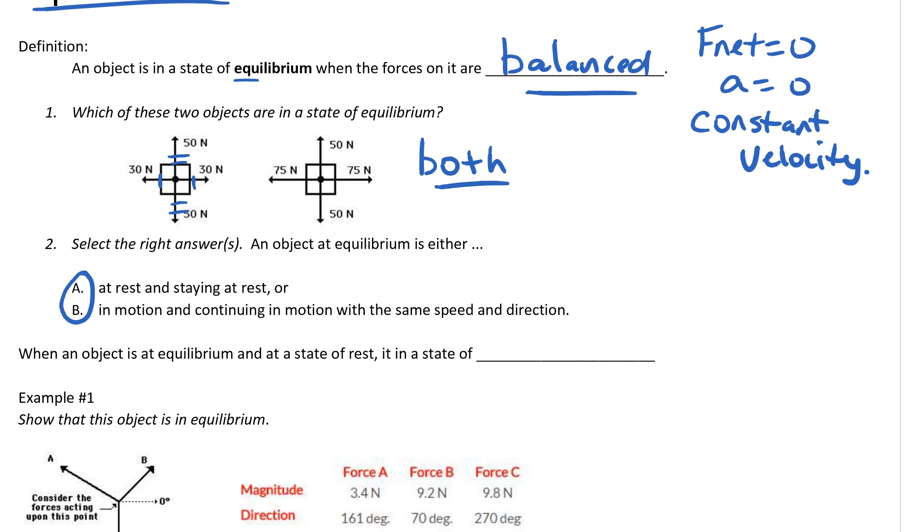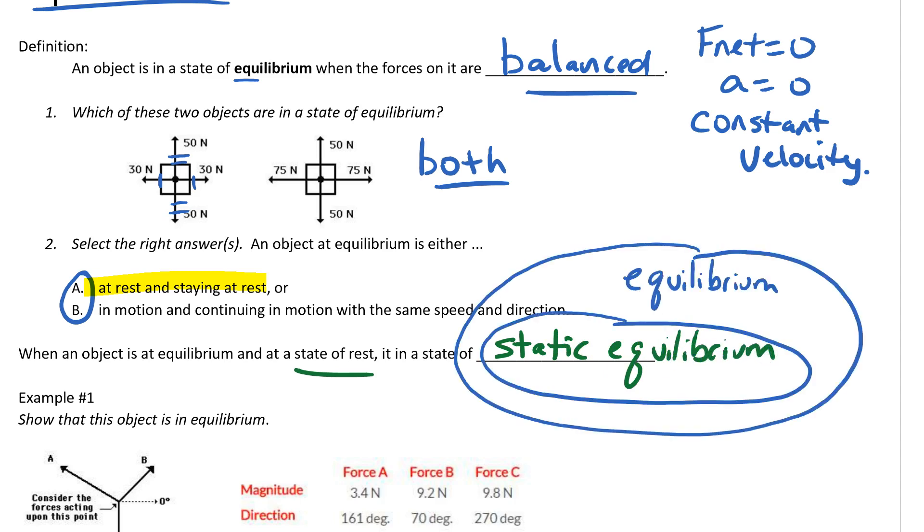If we take a look at this first one, when it's at rest and staying at rest, that is a special case of equilibrium. If it's in a state of rest, we're going to say it is in a state of static equilibrium. Here I've drawn a quick little Venn diagram saying that static equilibrium is a special case of equilibrium.